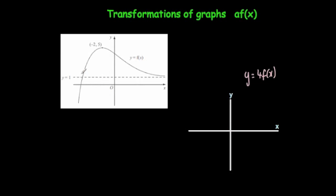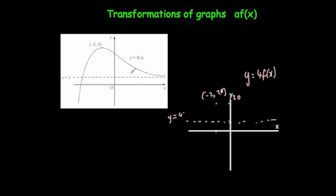For the last question, we've got this graph. It comes up, has a maximum of minus 2, 5, and then it approaches the asymptote of y equals 1. We're going to multiply all the heights by 4, so minus 2, 5 will go to minus 2, 20. Also, the asymptote was y equals 1 — we multiply that by 4 to get y equals 4. Multiplying by 4 makes it steeper, so it's going to come up very quickly, come down, and then approach the new asymptote of y equals 4.